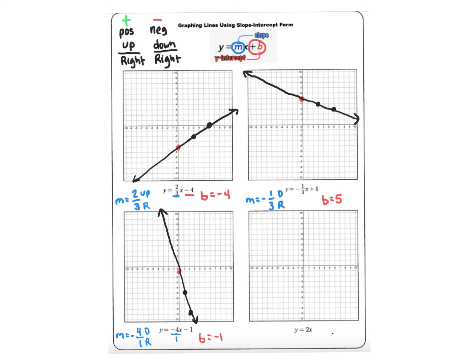Finally, we might have an instance where there's no denominator and also no y-intercept value shown. The slope is two over one, so we go up two and right one. Since there's no number for the y-intercept, we start at zero. From there, up two and right one, up two and right one again, and we draw the line. That's a brief overview of graphing lines in y equals mx plus b form, or slope-intercept form.